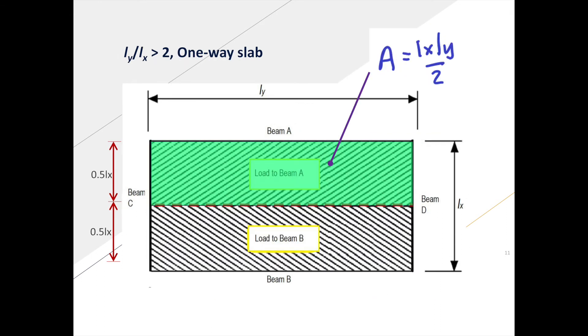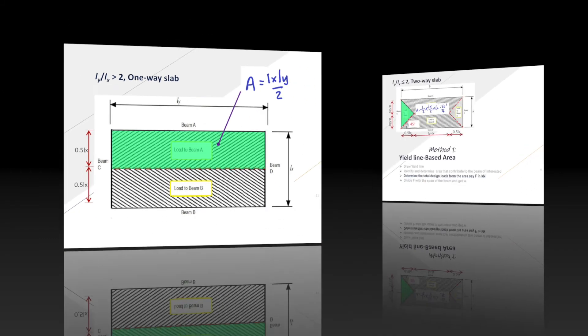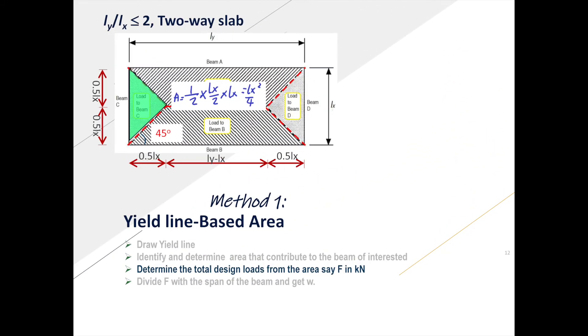For one-way slab, the highlighted is the region that will contribute to beam A, and the same area will contribute to beam B, and the equation can be obtained using area equation of a rectangle. Then we can determine the total design loads from the area.